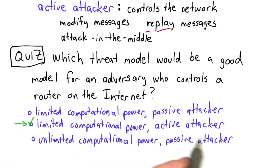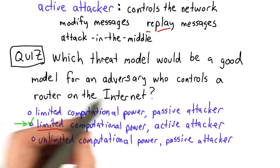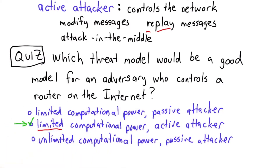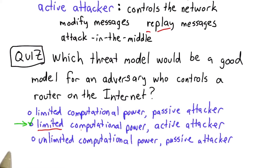For most of what we're going to do, we're going to assume this threat model. We're going to assume an attacker who does have limited computational power. That means we'll assume that encryption and hash functions work the way they're supposed to — certainly that's not always true, and they could have weaknesses that an attacker could exploit.